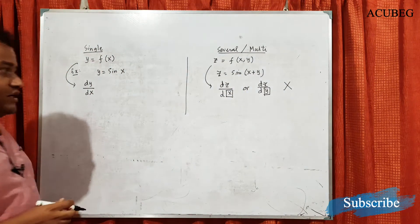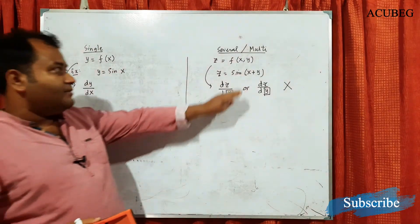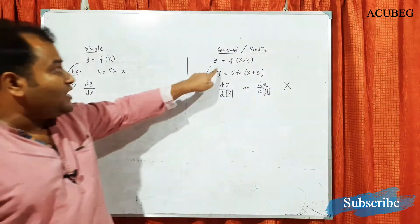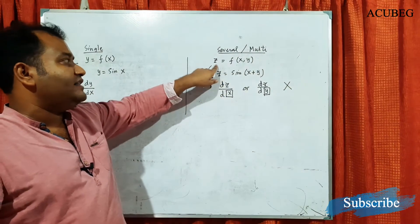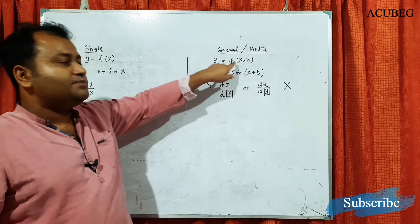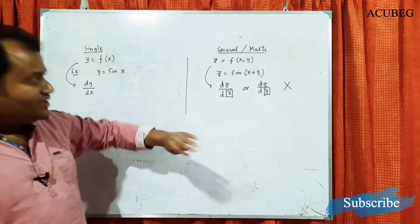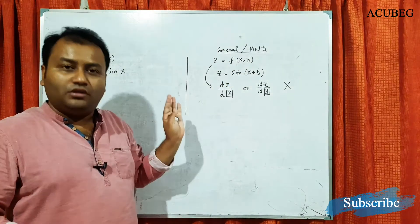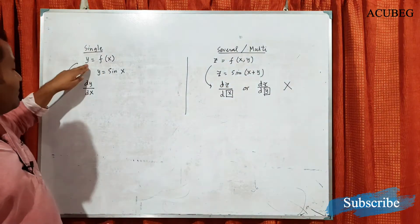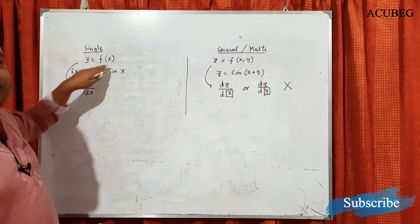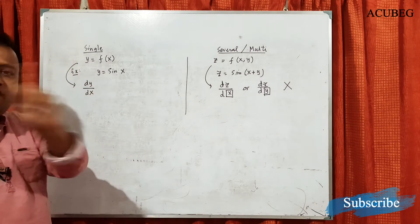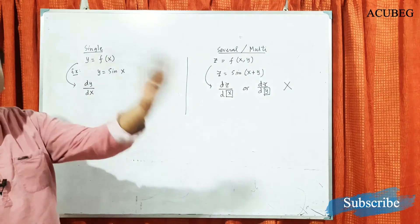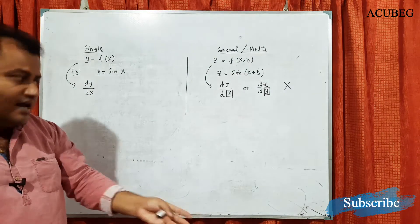We have to introduce the concept of derivative for this multivariable function. We can find the derivative of z with respect to x, as well as with respect to y — both have the same role. But for a single variable function, we can only find the derivative of y with respect to x, because it has only one variable. In multivariable, we have more options.